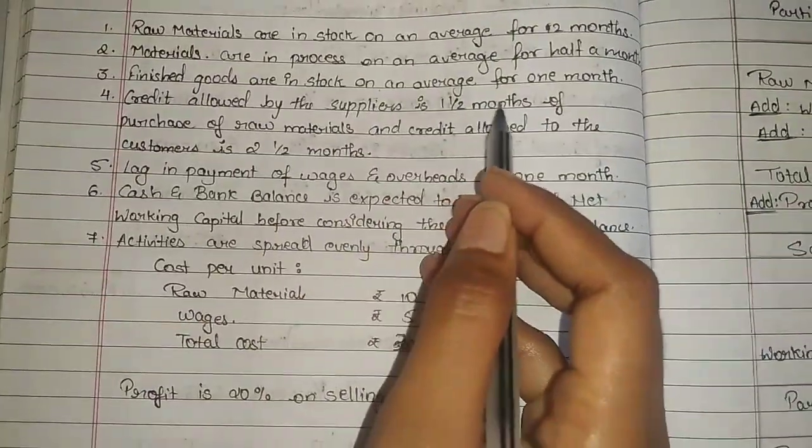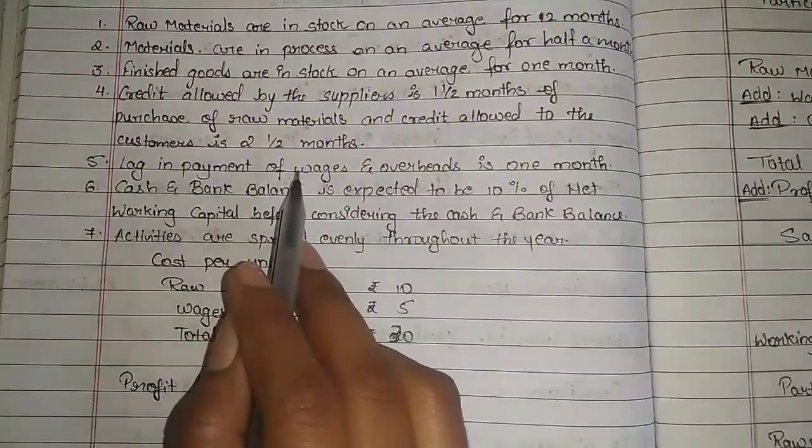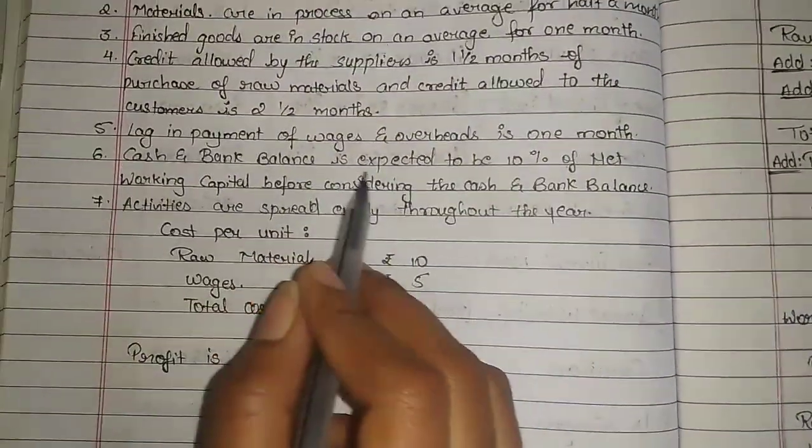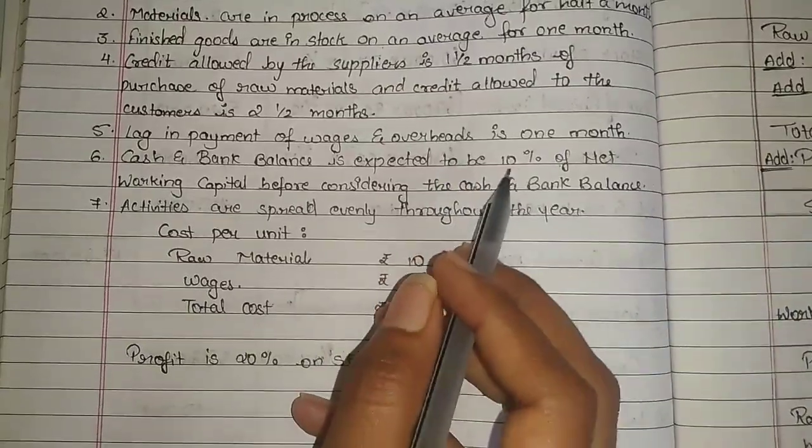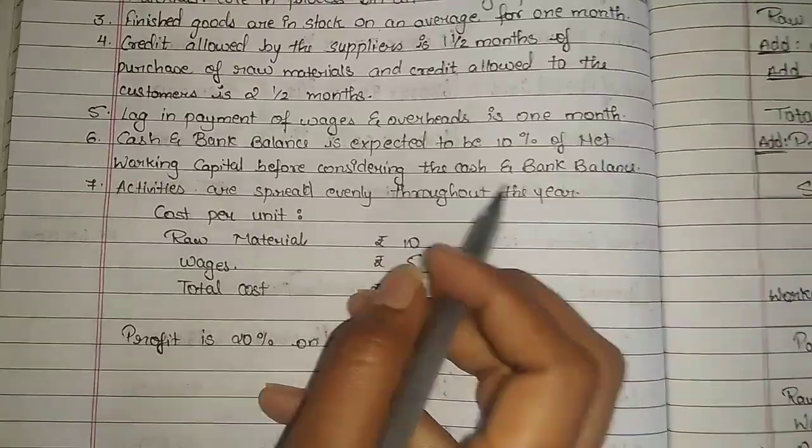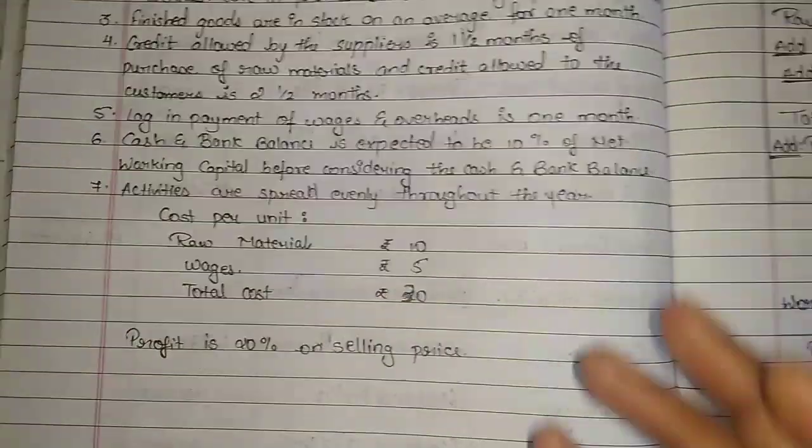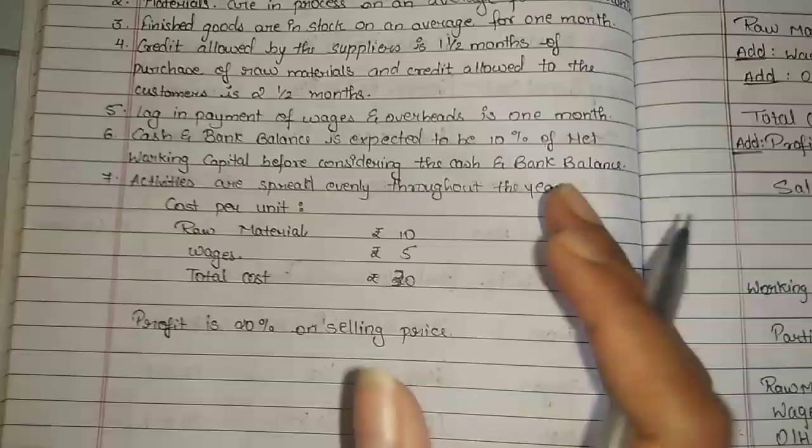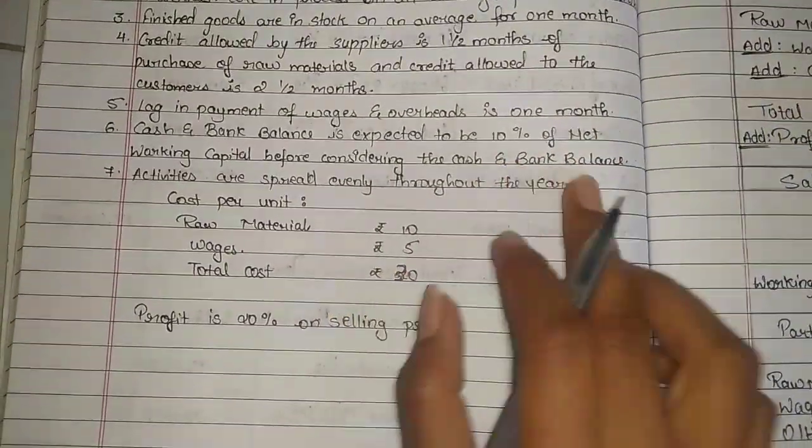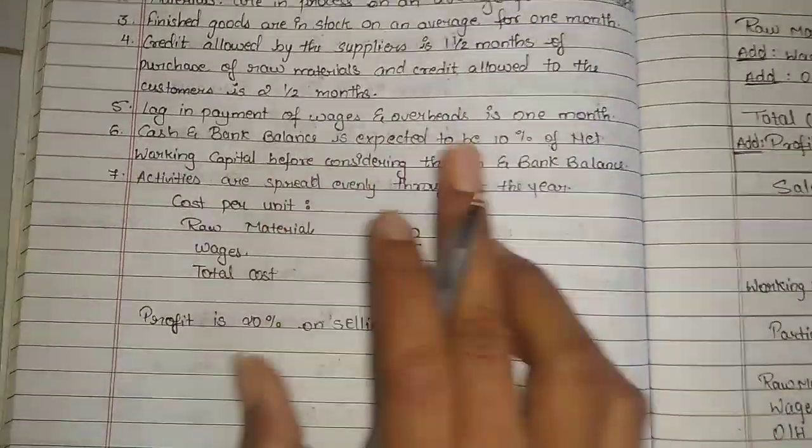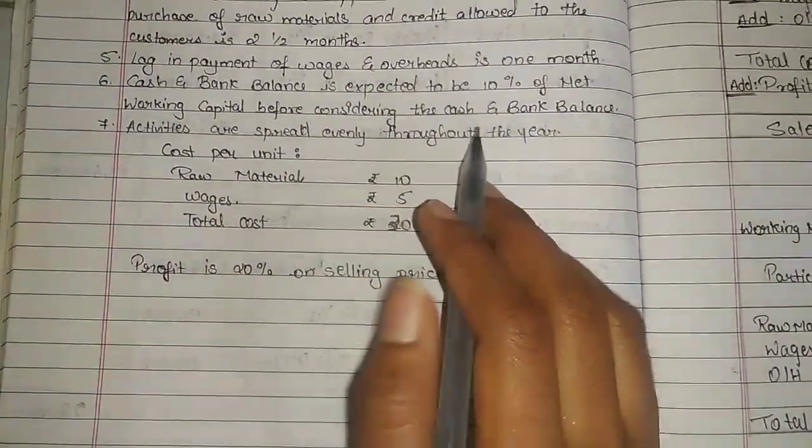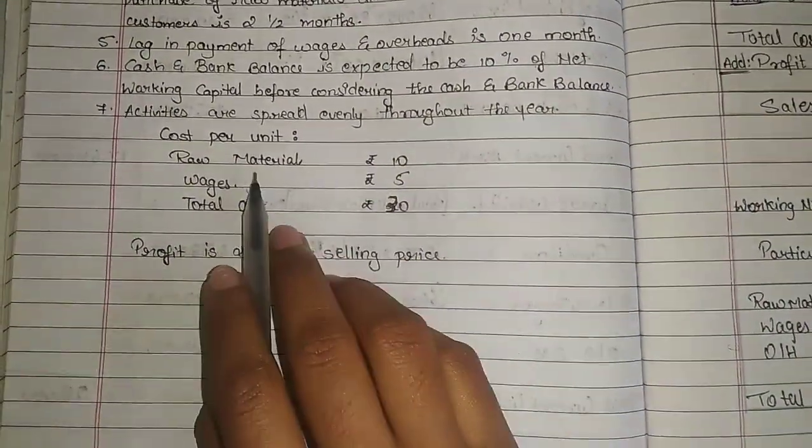Credit allowed to the customer, that is our debtors, 2 and a half months 2.5. Lag in payment, that is outstanding of wages and overheads, is 1 month. Cash and bank balance is expected to be 10% of net working capital before considering the cash and bank balance. What does that mean? We will consider cash and bank balance without considering the net working capital. The 10% of cash and bank balance is calculated without working capital first.